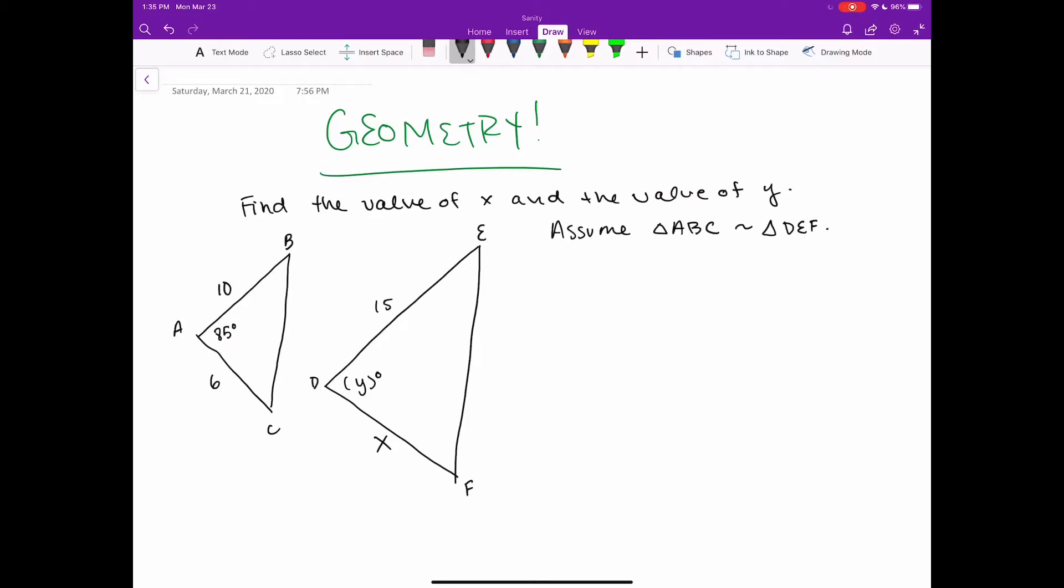Here I have a question that says find the value of x and the value of y. I see that I have my y down here in triangle DEF and also my x value for this segment length of DF. And we're assuming that triangle ABC is similar to triangle DEF.